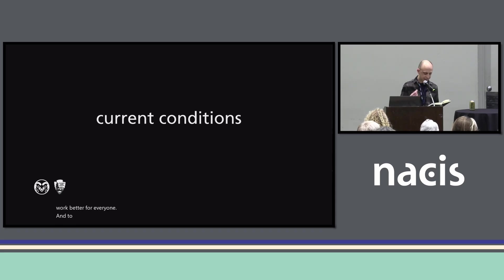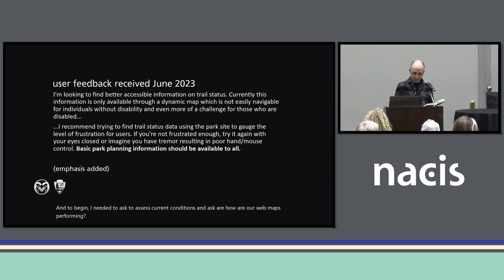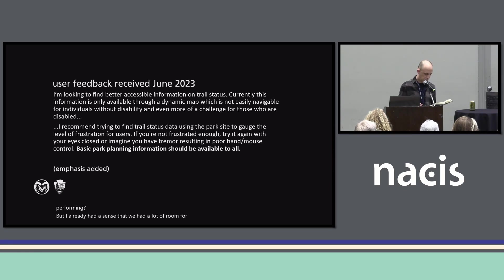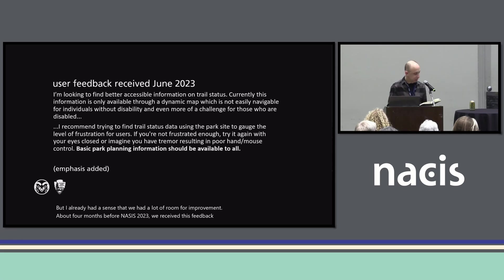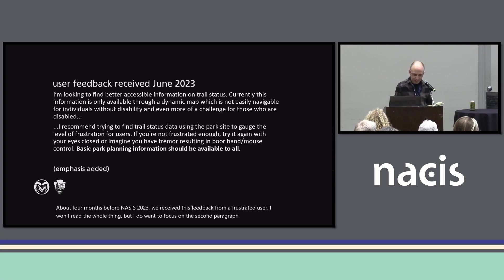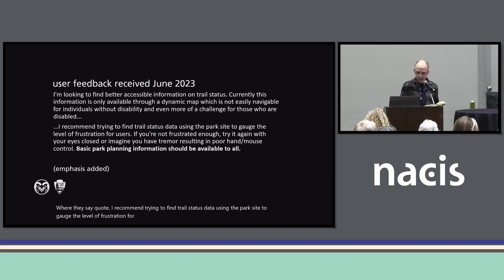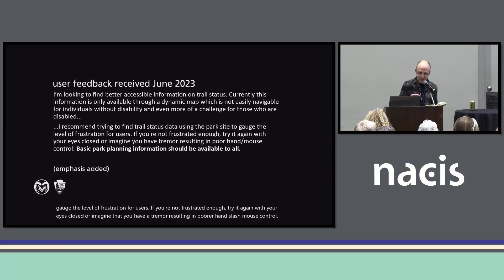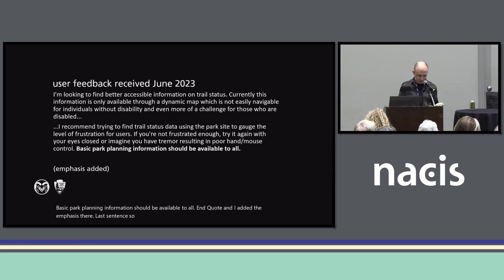To begin, I needed to assess current conditions and ask: how are our web maps performing? I already had a sense that we had a lot of room for improvement. About four months before NACIS 2023, we received feedback from a frustrated user. I want to focus on the second paragraph where they say, quote: 'I recommend trying to find trail status data using the park site to gauge the level of frustration for users. If you're not frustrated enough, try it again with your eyes closed or imagine that you have a tremor resulting in poor hand/mouse control. Basic park planning information should be available to all.' Reading this feedback convinced me that the work needed to start now.